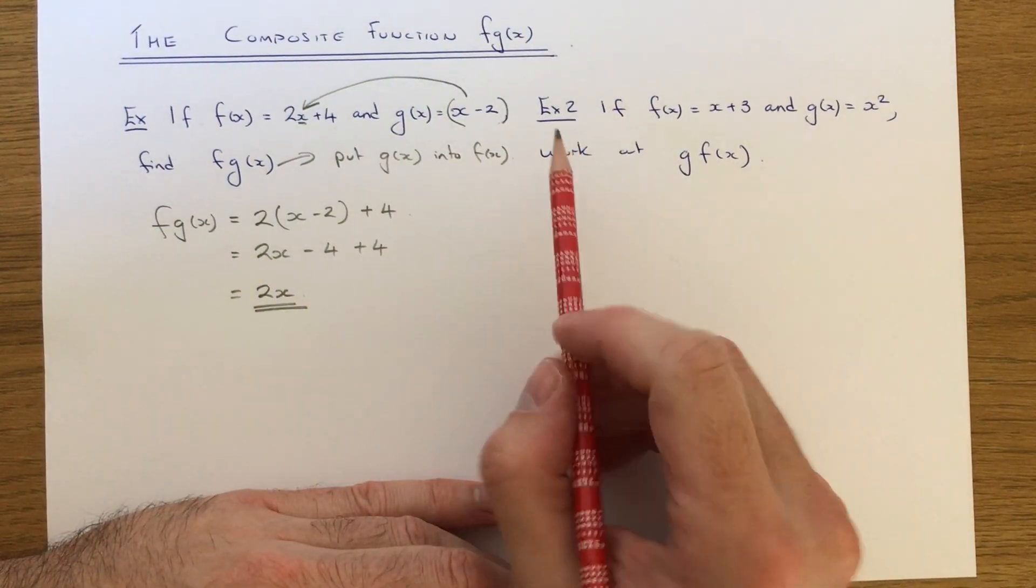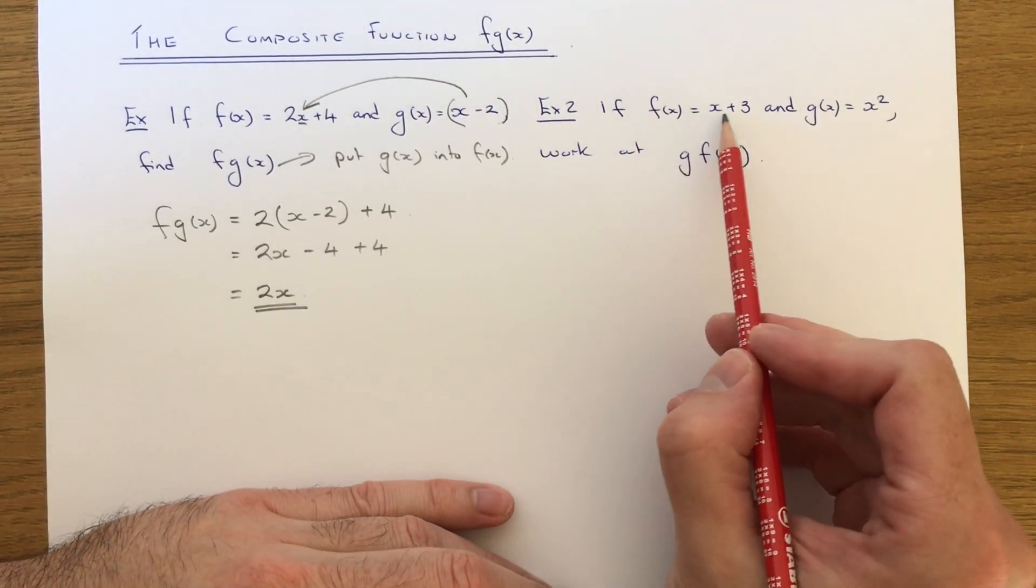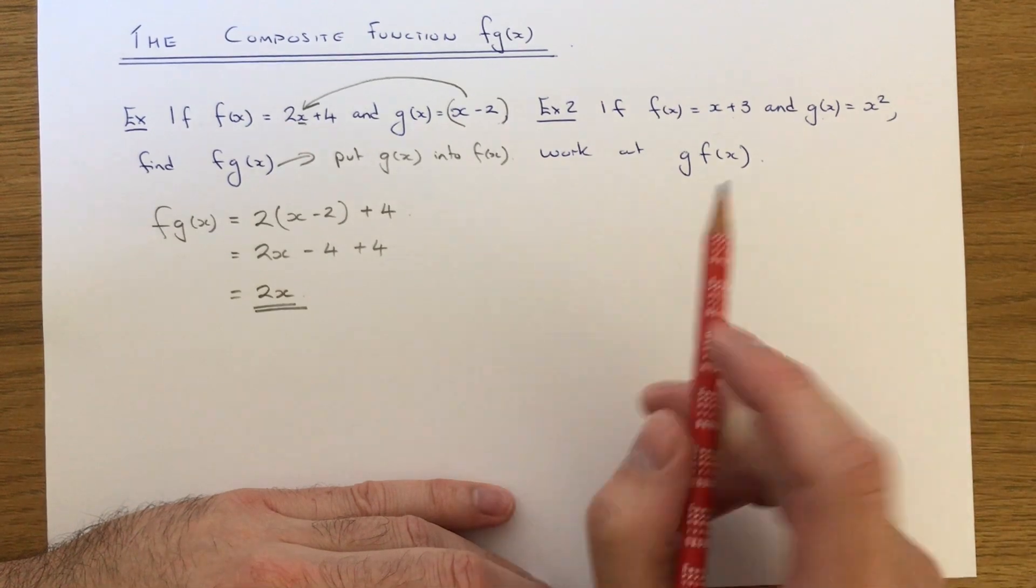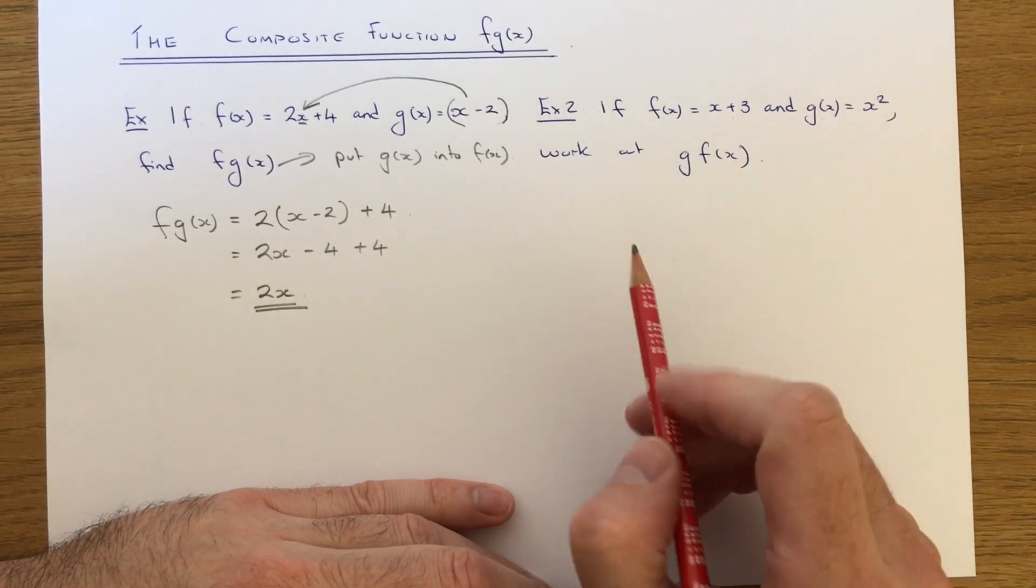So we'll look at example 2 then. So this time we've got f of x equals x plus 3 and g of x equals x squared. So this time we need to work out g f of x.